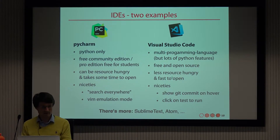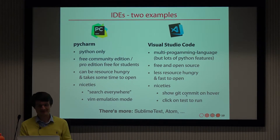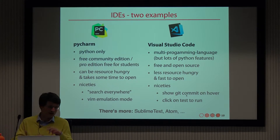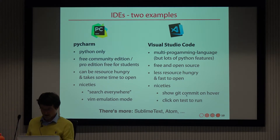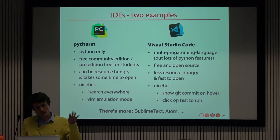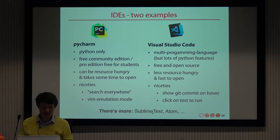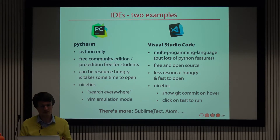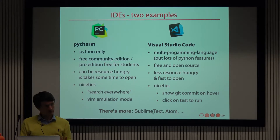Visual Studio Code is less resource hungry and faster to open, with some nice features — for example you can hover over a line and it tells you which git commit last changed it, or click on a test file in the profile browser to just run those tests. There are many more editors out there; I don't suggest only these two, but if you're not using an IDE and not a super experienced Vim or Emacs user, you should consider using one.